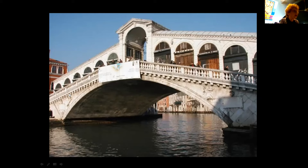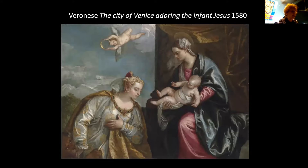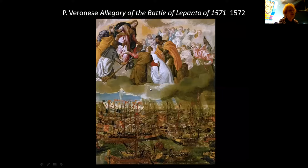Those of you who have been to Venice will know that around the Rialto Bridge, you have images of the Annunciation everywhere — Mary over here and Gabriel over here. Veronese in particular will be the painter who foregrounds the idea of Venice's special connection with the Virgin Mary. Here we have the city of Venice as a beautiful Venetian woman adoring the infant Jesus. There is a kind of osmosis in many ways between Venice and the Virgin Mary, and the paintings of Veronese often depict this.